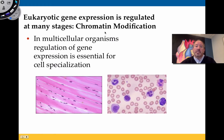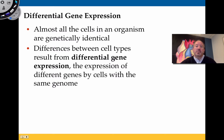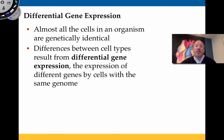For that specialization to take place, multicellular organisms need to regulate their gene expression. Almost all cells in an organism are genetically identical — my cheek cells, muscle cells, and neurons all have the same DNA. Any differences between them come from how genes are expressed. The expression of different genes within the same genome causes differentiation to occur, so it's really important to understand why a gene would or would not be expressed.